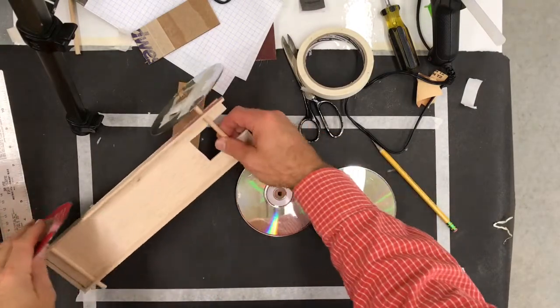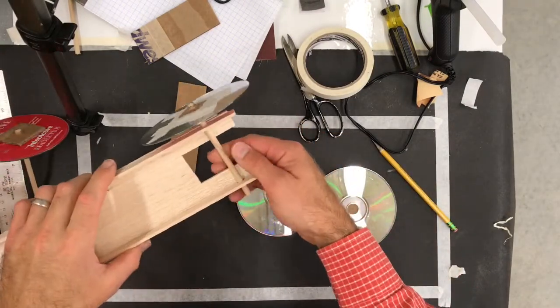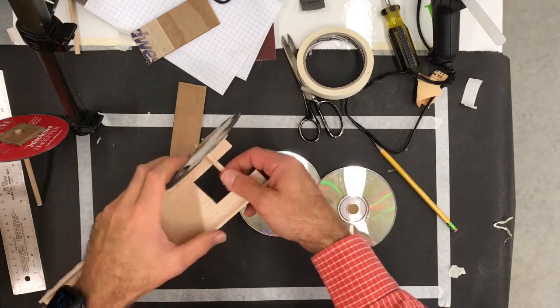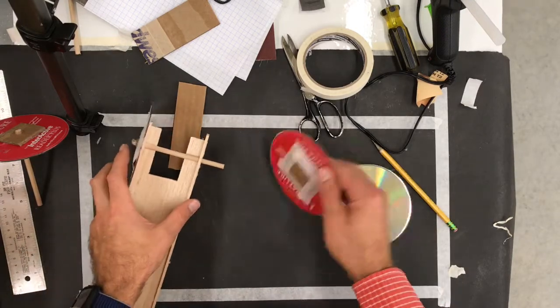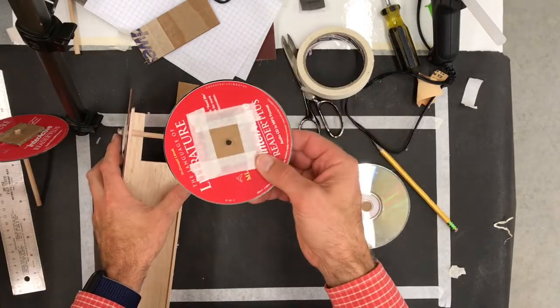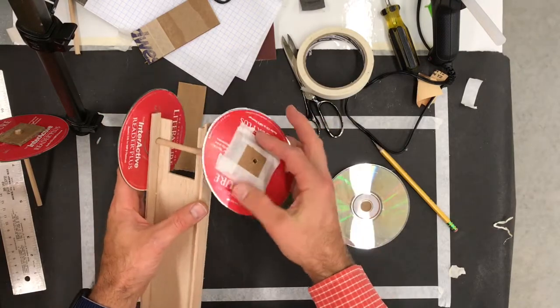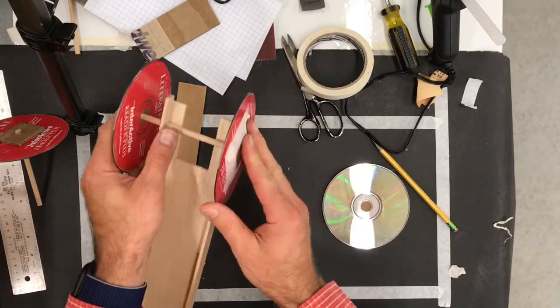All right. So after we have one wheel created, and it spins quite well, the next step is to create the rest of your wheels. So using tape again on the CD, and then a pencil to create the hole, you can slide on the other, in this case, rear wheel.